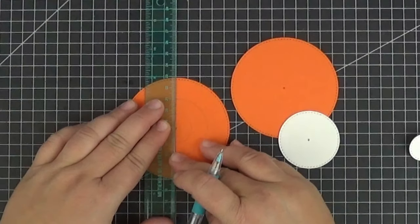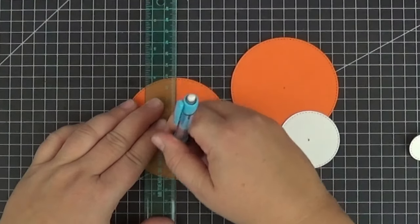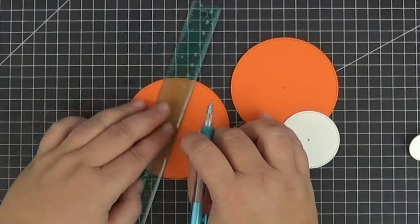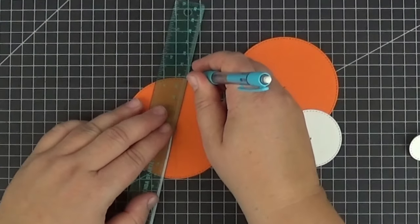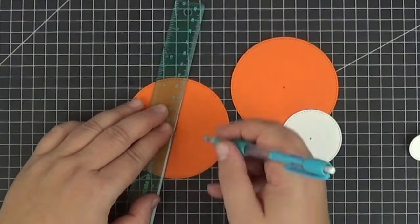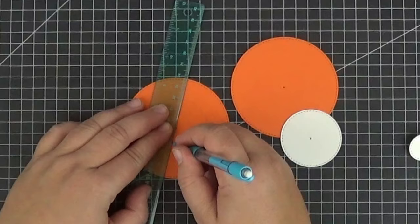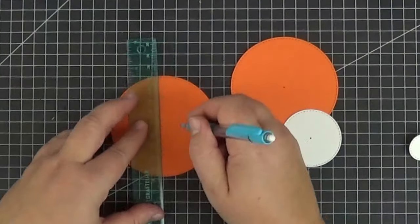Let's grab a ruler and trace a line down the middle of the orange circle. Now I'm going to use the grid as a reference to draw another line diagonally. My grid is in centimeters so one square equals three eighths of an inch. It doesn't have to be super exact.